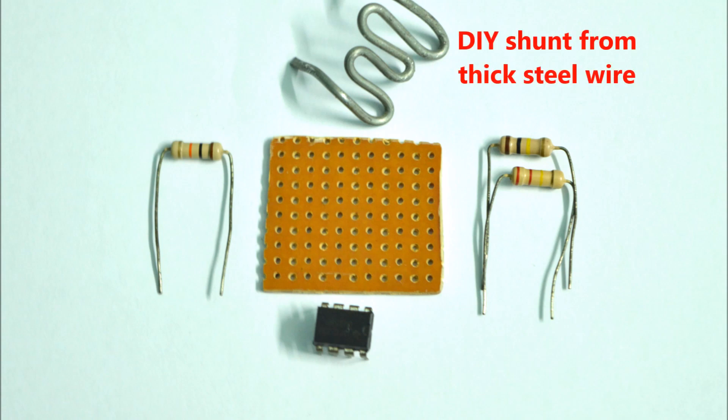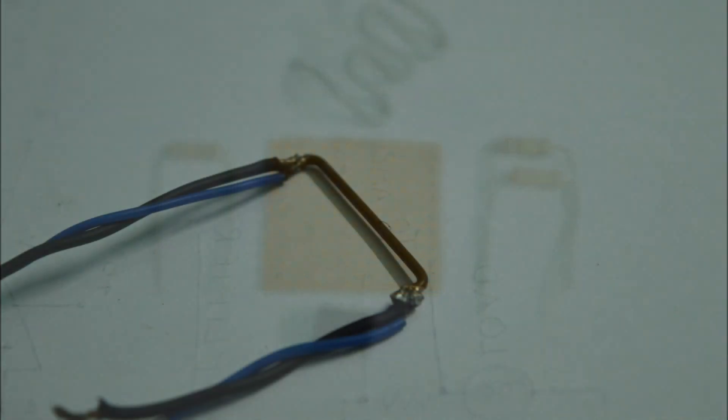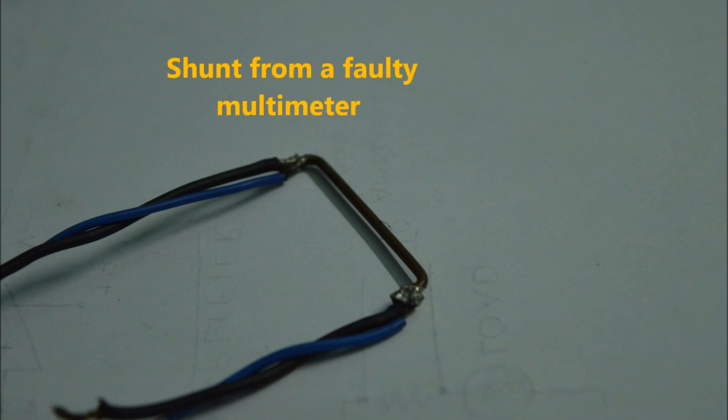For making the shunt, I had a large single core steel wire laying around in my home which I cut it to a reasonable size and just bent it around to give it a proper shape. You can easily make such kind of a shunt if you have such steel wire at your home, or you can simply salvage some of these shunts from old unused or damaged multimeters. Any of these shunts will work typically fine.